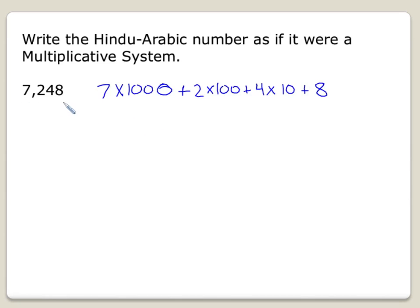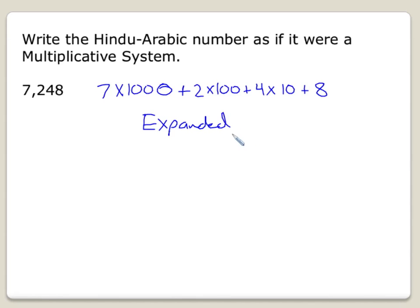This is a place value system — we'll talk about this more later — but it's really a compacted multiplicative system. A multiplicative system will actually write this out in expanded form every time. So the value of the number is not determined by the place; you actually see the multiplication happening.